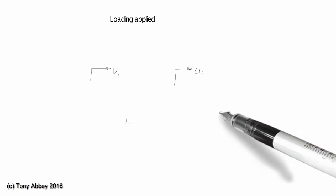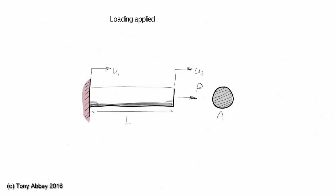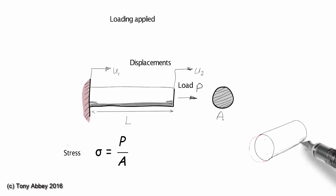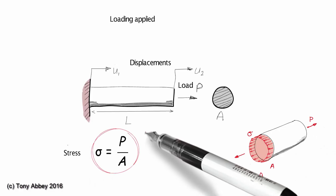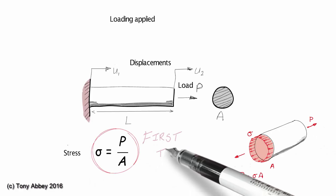Meantime, back to our rod. We are applying P and defining the displacements U1 and U2. The stress is defined as the force divided by the area. It's constant across the cross section of the rod. We can picture the stress as a constant flow through the section. That's our first task complete. The stress is simply force divided by area.